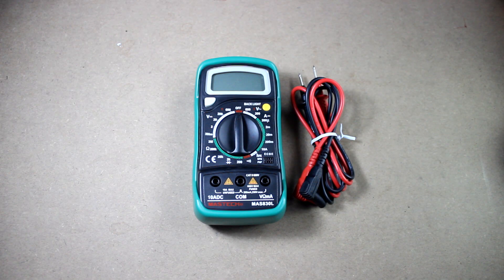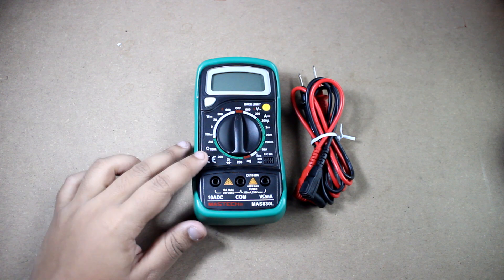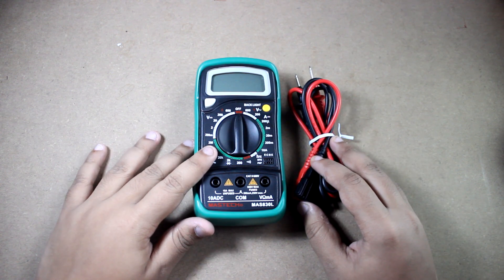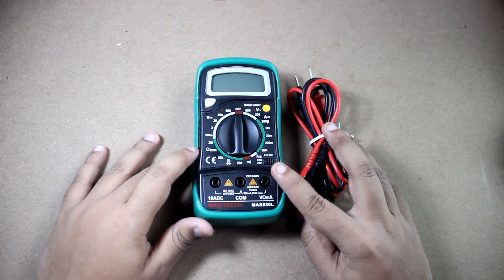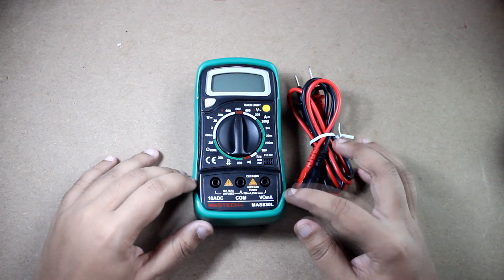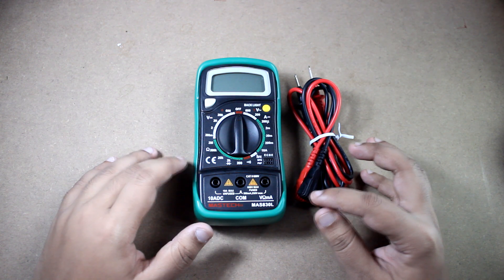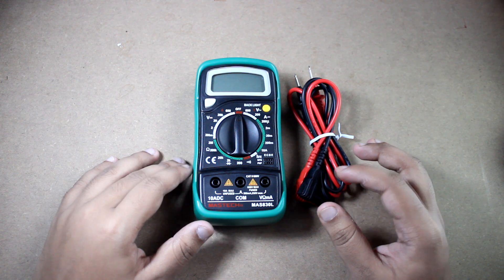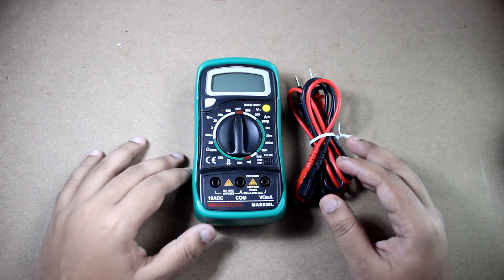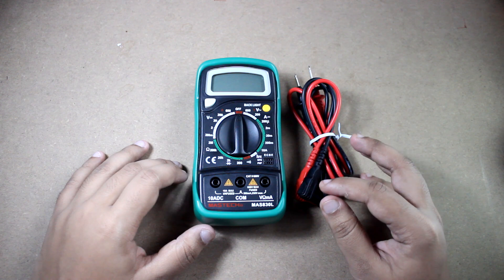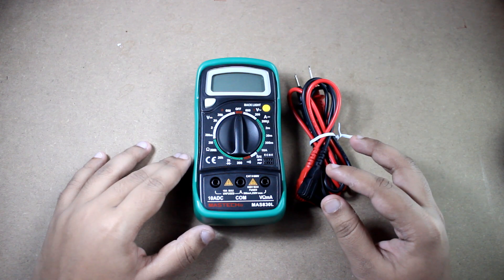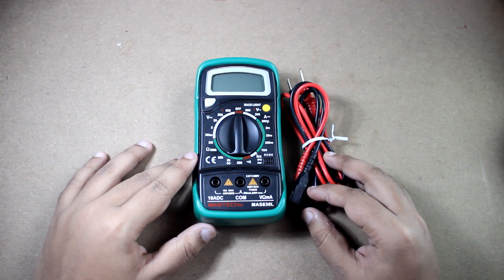Hello guys, welcome to Bing Engineers. In this tutorial I will tell you how to measure AC voltage by using a multimeter. I am using Mastic MAS 830 L. I did the unboxing and first impression in the previous video. I will give a link in the description, check it out if you want. Now to measure AC voltage with a multimeter...